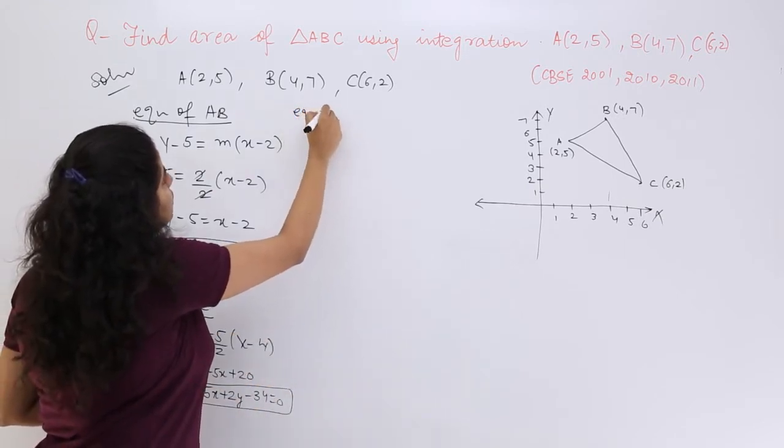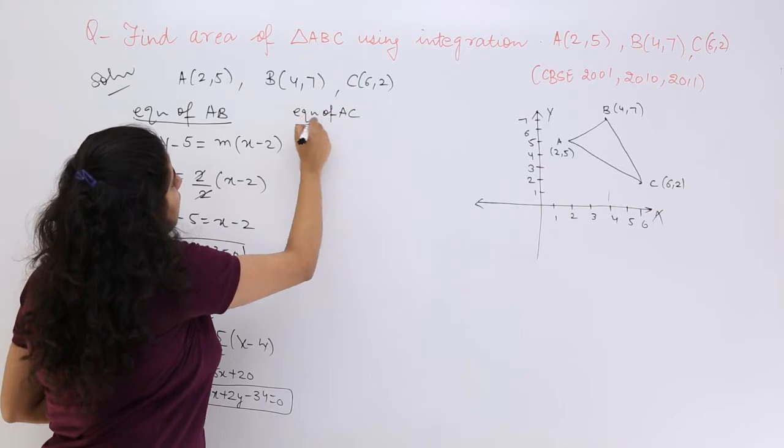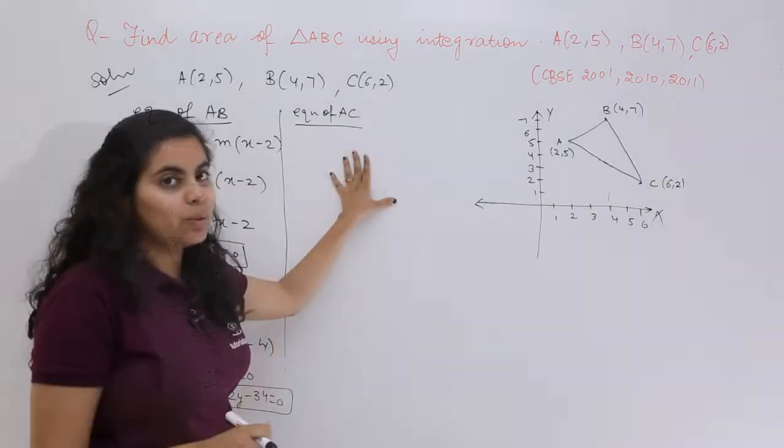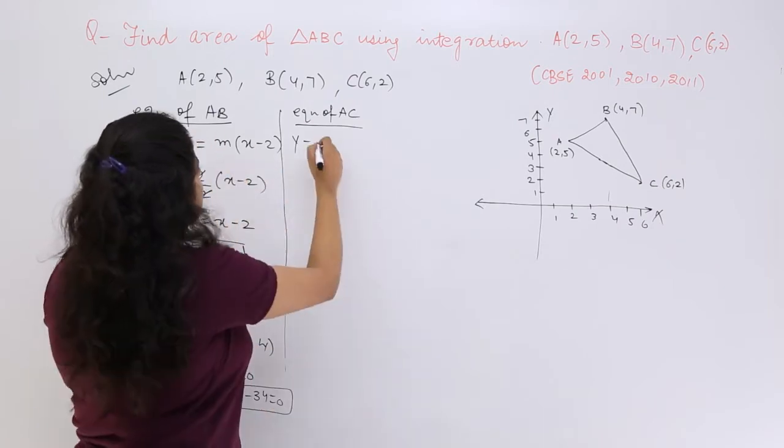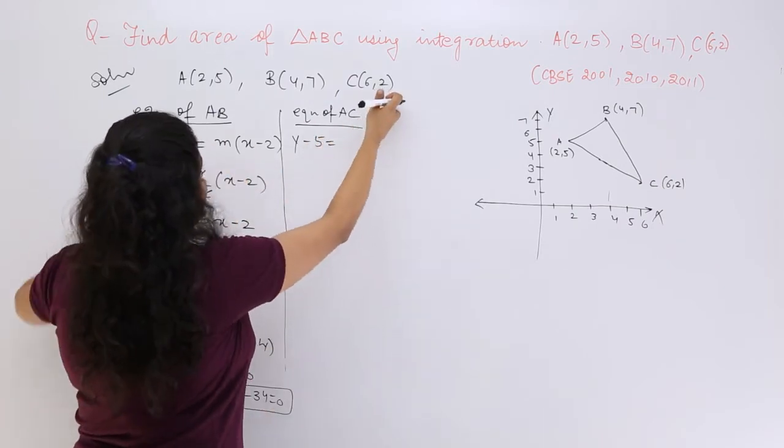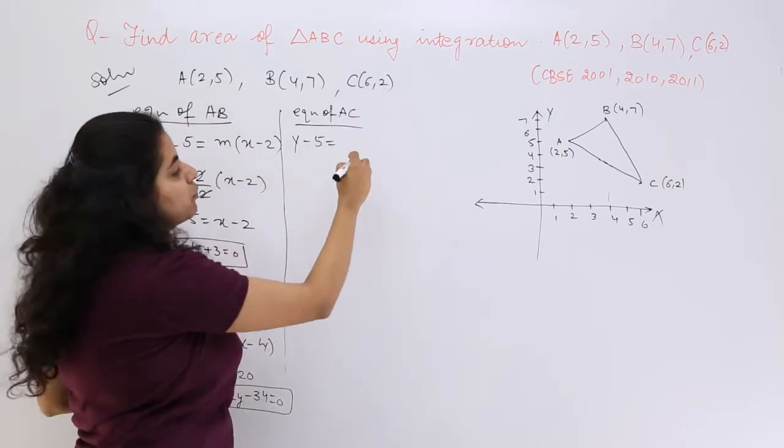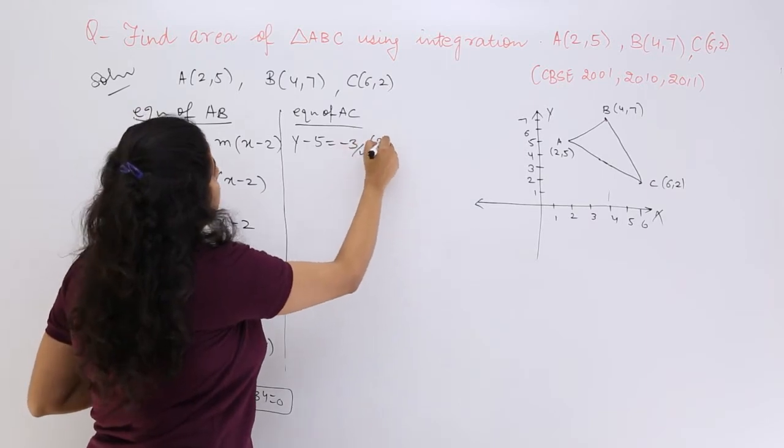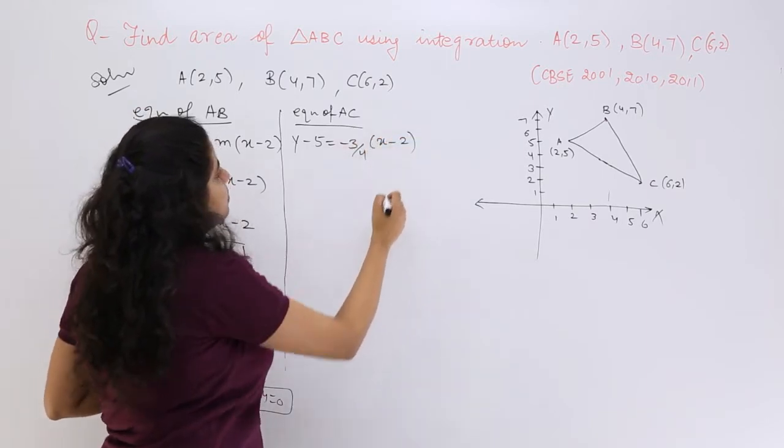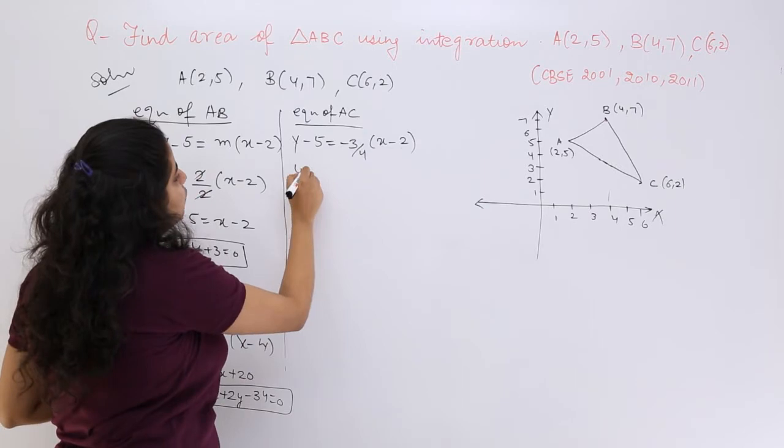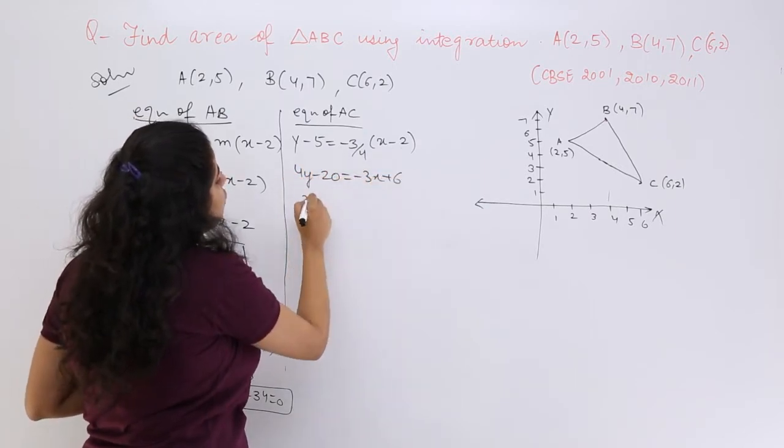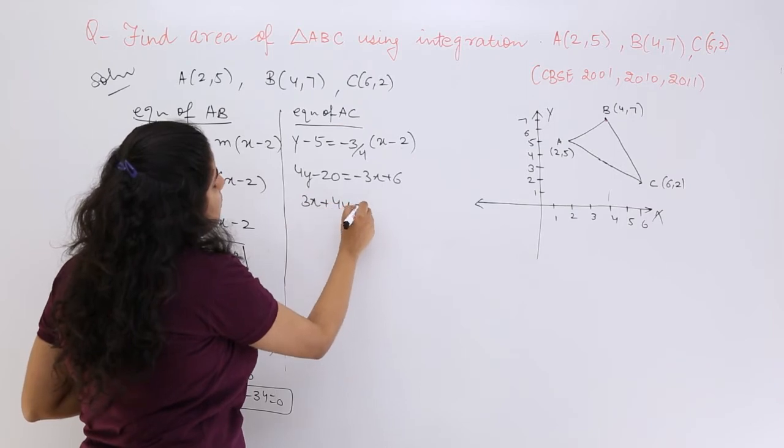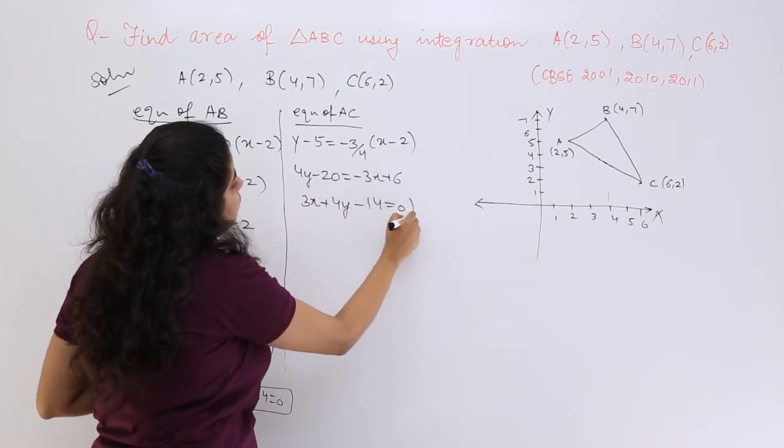Let me find out the next equation, equation of AC. What should be the equation of AC? It should be y - y₁ = m(x - x₁). What is the slope? -3/4, so m times (x - x₁), which is (x - 2). Now let's take the LCM: 4y - 20 = -3x + 6, so 3x + 4y - 14 = 0. That is equation number 3.